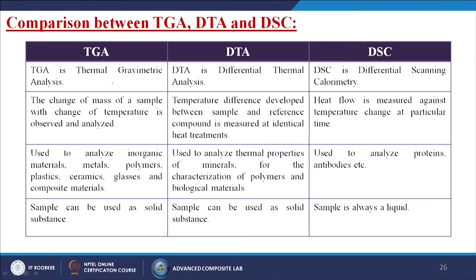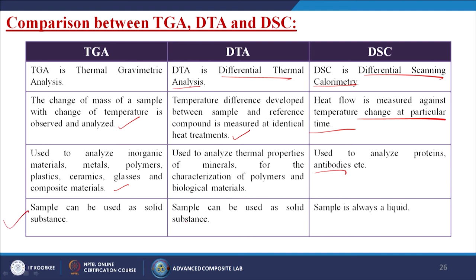Comparison between TGA, DTA, and DSC: TGA is thermogravimetric analysis — change of mass of a sample with change of temperature is observed and analyzed. DTA is differential thermal analysis — temperature difference developed between sample and reference compound is measured at identical heat treatments. DSC is differential scanning calorimetry — heat flow is measured against temperature change at a particular time. TGA is used to analyze inorganic materials, metals, polymers, plastics, ceramics, glasses, and composite materials. DTA is used to analyze thermal properties of minerals, characterization of polymers, and biological materials. DSC is used to analyze proteins or antibodies. For TGA and DTA, sample can be used as a solid substance; for DSC, the sample is always a liquid.